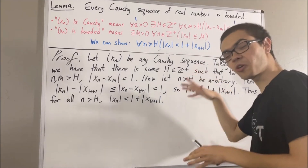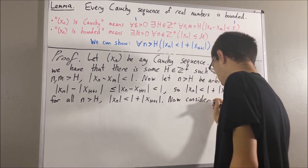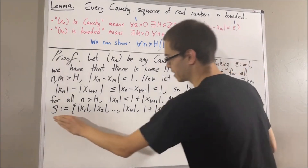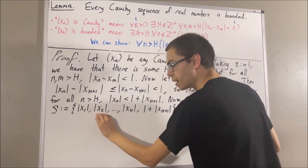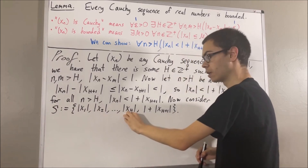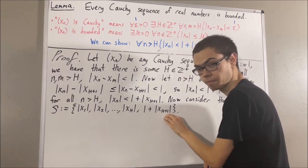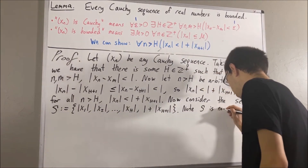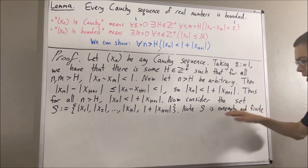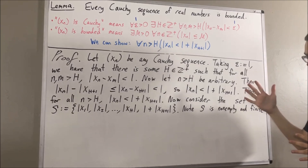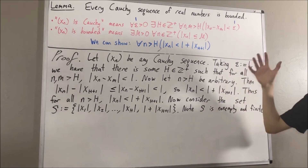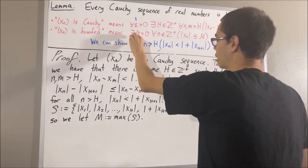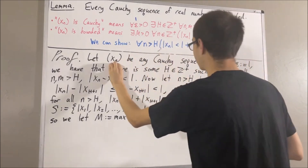Now let's consider the following set, which we'll call S. Our set S consists of the absolute value of x1, absolute value of x2, and so on up to the absolute value of xh, and in addition it contains 1 plus the absolute value of x_{h+1}. It's clear that S is non-empty and finite, and every non-empty finite set of real numbers has a largest element. So we'll call the largest element of S capital M. Our claim is that this choice of capital M will allow us to show that xn is bounded.